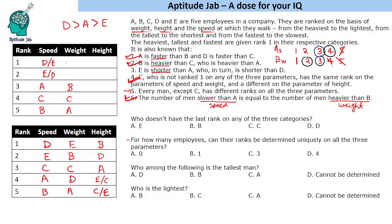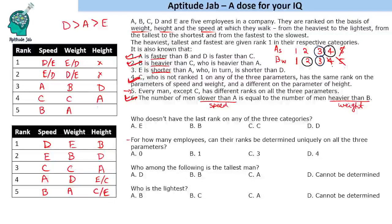In Case 2, D and E fill the remaining speed and height positions. D cannot occupy certain positions because D must be taller than A, who is taller than E. For the remaining weight slots, C cannot be first, so B is first and C is second. These are the two complete solutions to the problem.